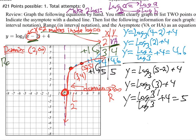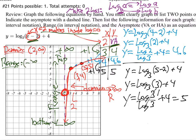The range — up and down — goes from negative infinity to positive infinity, because the log goes down forever and also up forever, just slowly. The asymptote is x equals 2, which is the vertical asymptote where the graph is guided toward but never touches.